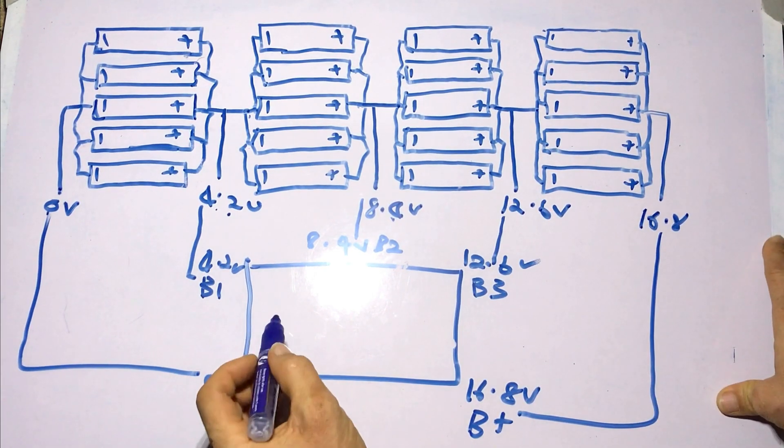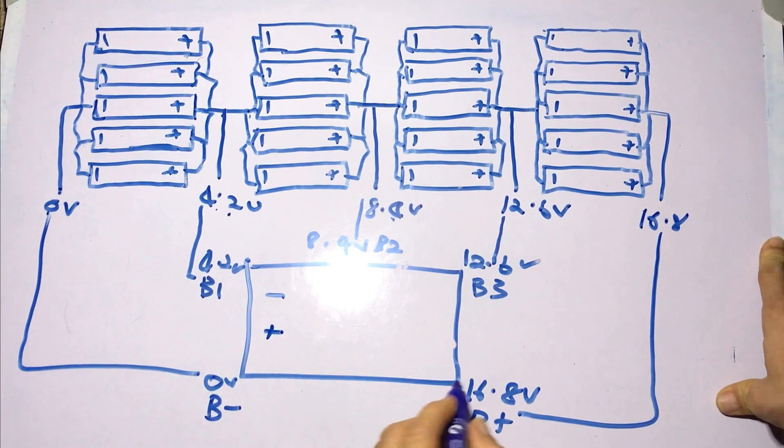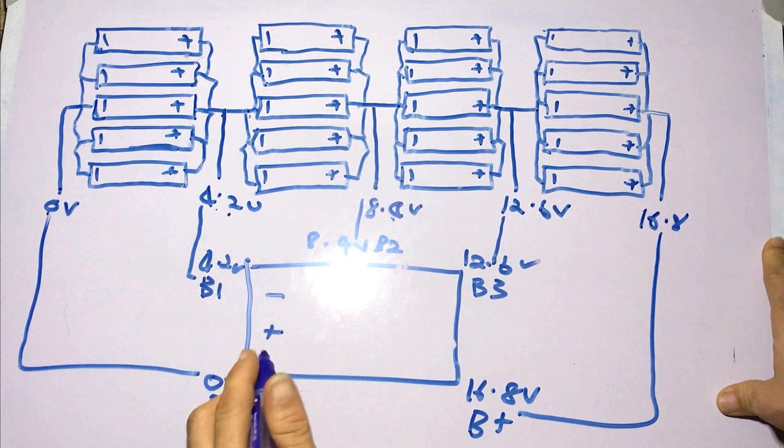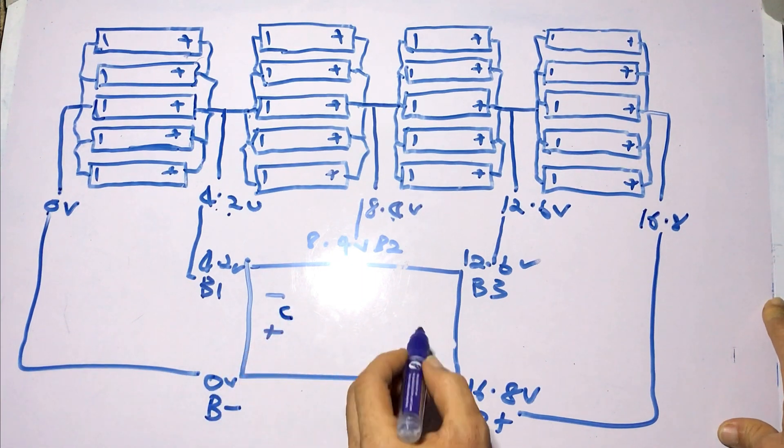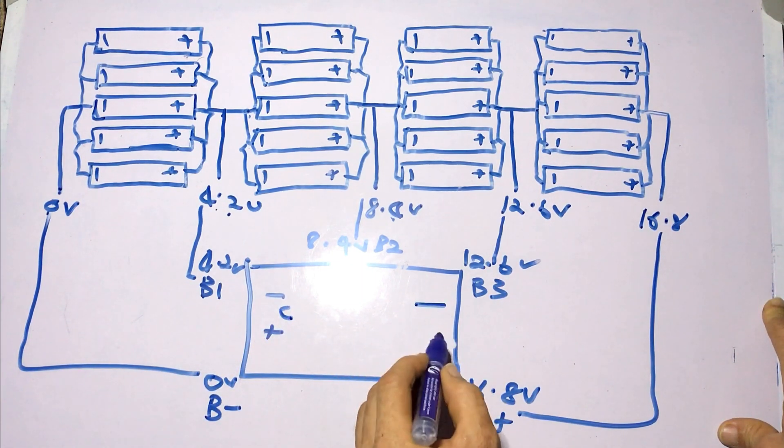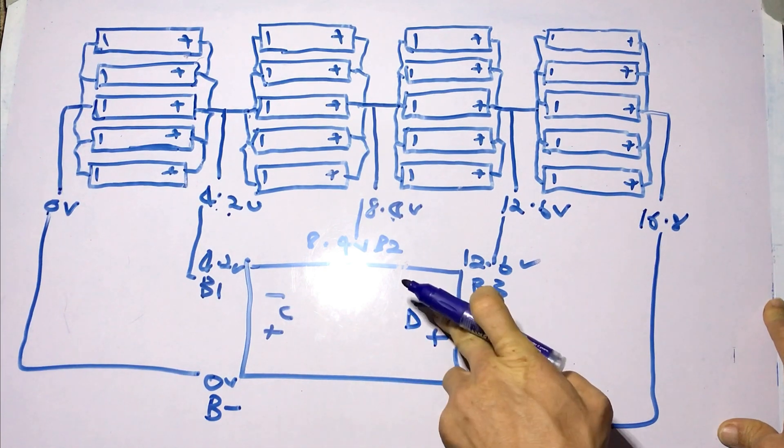Now for some BMSs, you'll have two connections for input and output which are labeled using a plus minus and you have C, then you have also plus minus here and D. This is a discharge output.